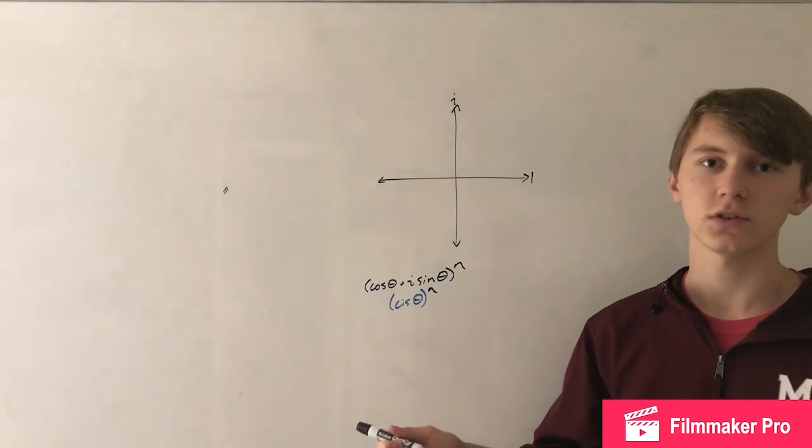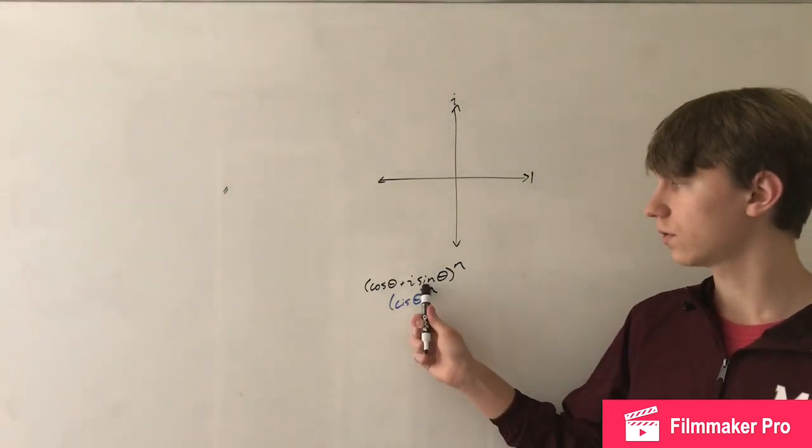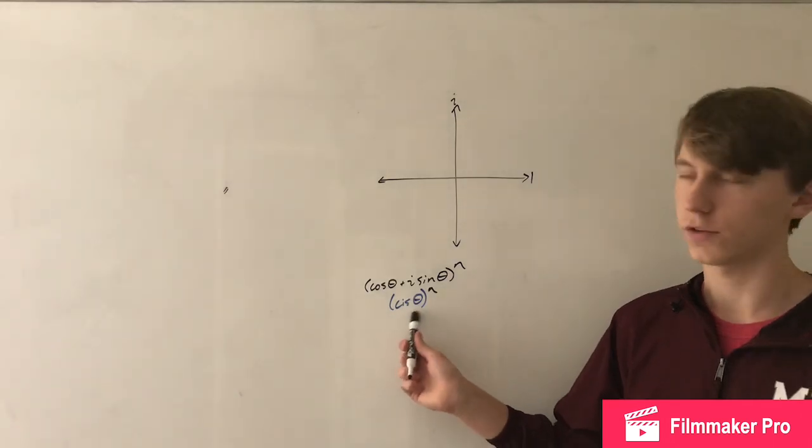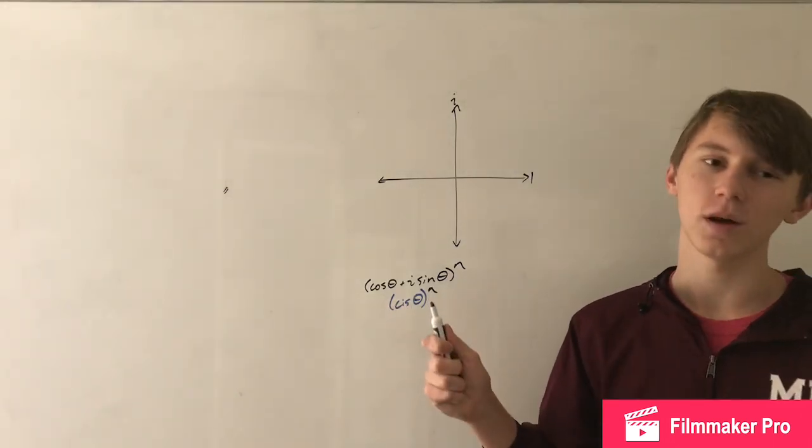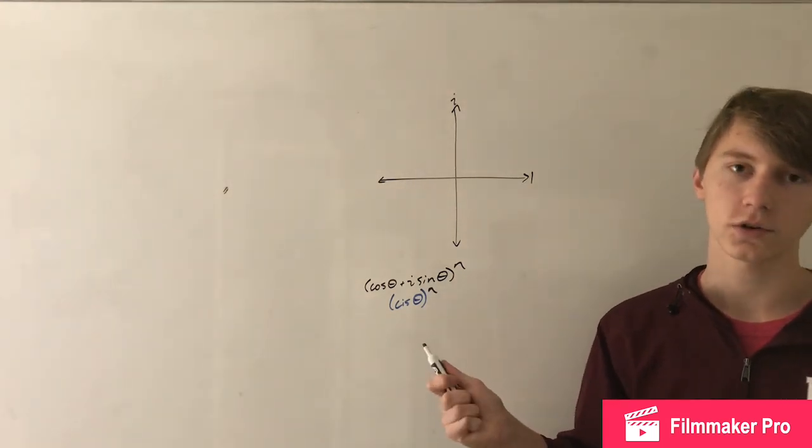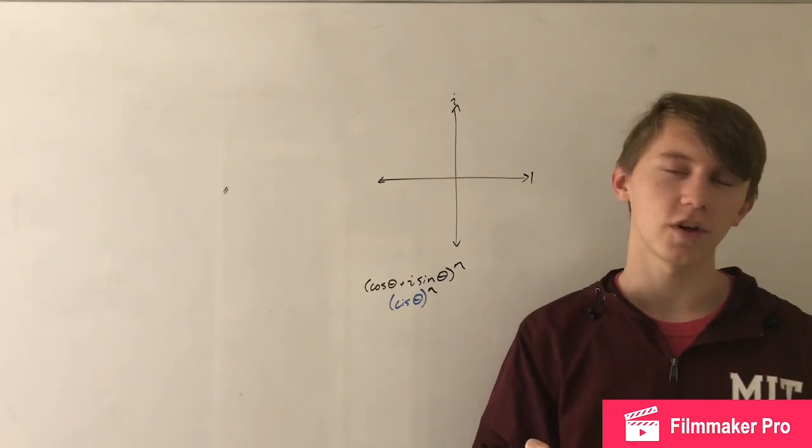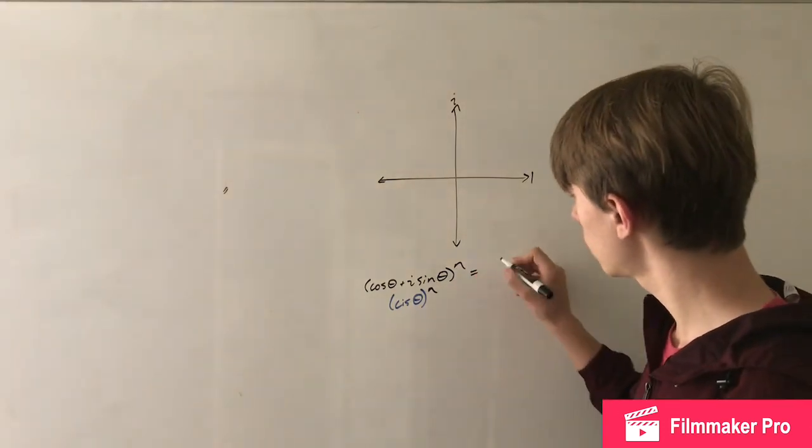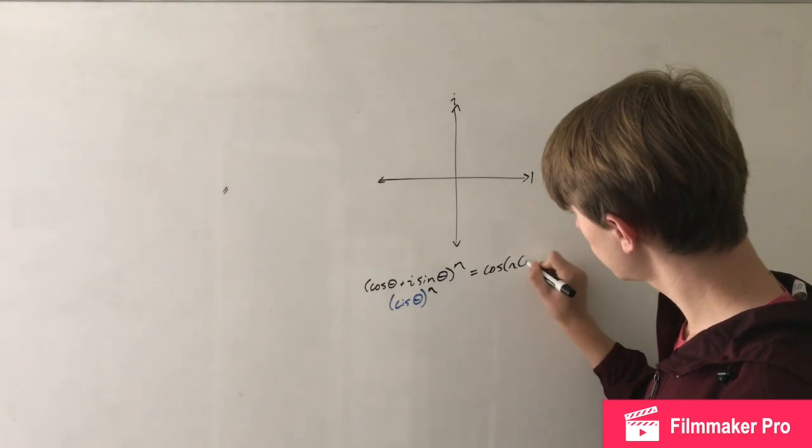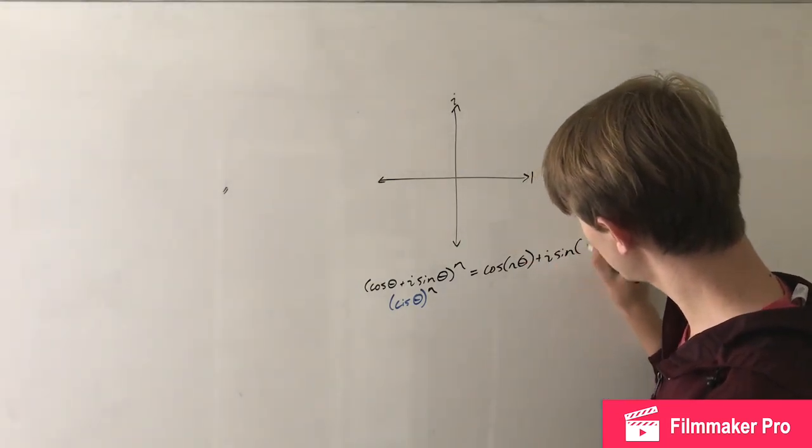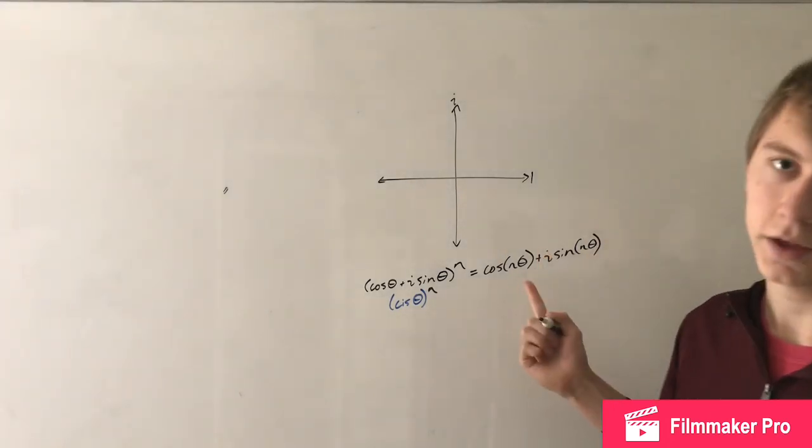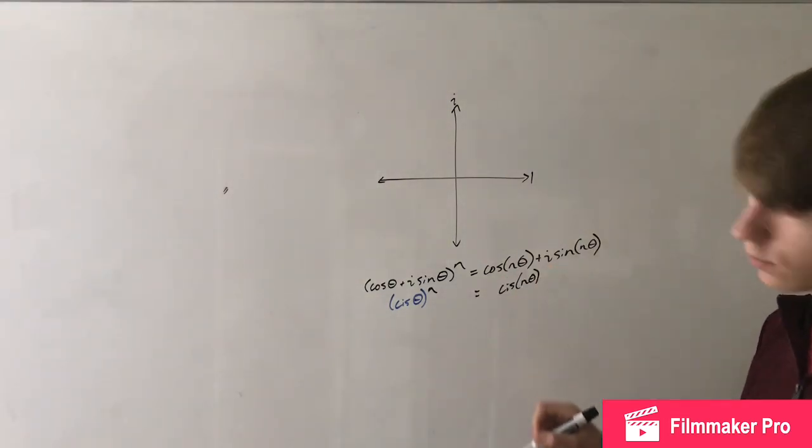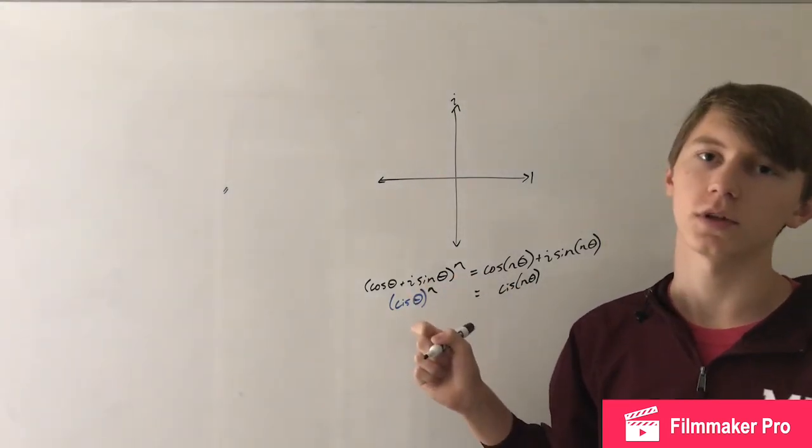So, De Moivre's Theorem essentially, as bare a minimum, calculates this, which is, if you remember from a few days ago, it's the same thing as KISS or SIS or whatever. So, it calculates this to any power, and it's a really complicated proof to why this works. And in the second book that I showed, there's about four or five pages dedicated to just proving this progressively. But, we get to that. And that is De Moivre's Theorem. And that becomes incredibly, incredibly useful in what we're doing.